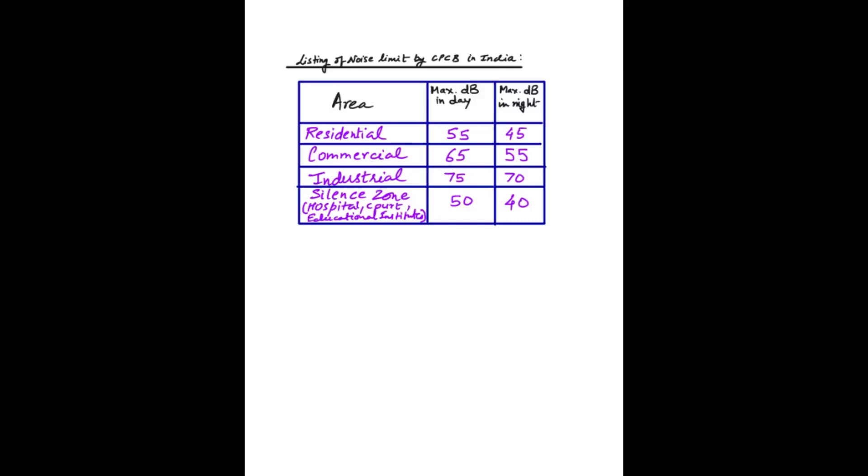Similarly, there are different limits for other areas such as commercial, industrial, and silence zones. Silence zone is in areas such as hospitals, courts, and educational institutes. During daytime, the decibel should not be more than 50, and in nighttime not more than 40. This is a very important table, so you can note these limits because in many exams, these limits are asked.